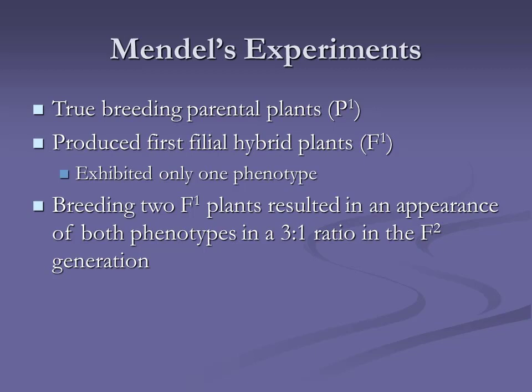Mendel found that if you took two pure parents of two different traits and bred them together, those are the parents, and the offspring — the F1 — would all be the same. If they were pure of the same thing, everything would always be the same. So he would take a purebred tall plant and a purebred short plant, breed them together, and all the F1 — the first generation of offspring — would all be of the dominant trait.